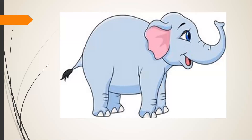Let's have a look at this elephant. As you can see from the picture, this part of the elephant is called the trunk. What is the function of the trunk? The trunk helps the elephant to eat food, to drink water, to breathe, and to smell. So the trunk of an elephant acts as both its nose and its hand.